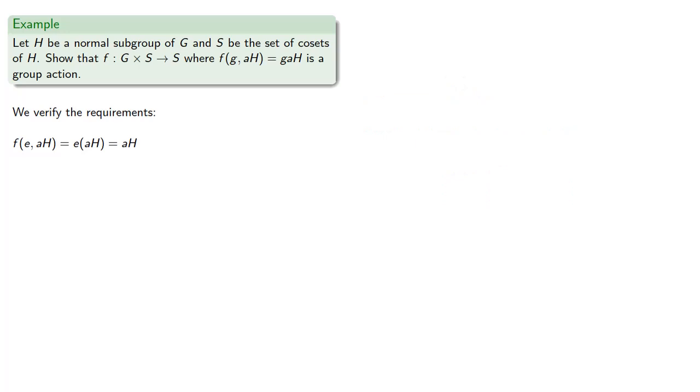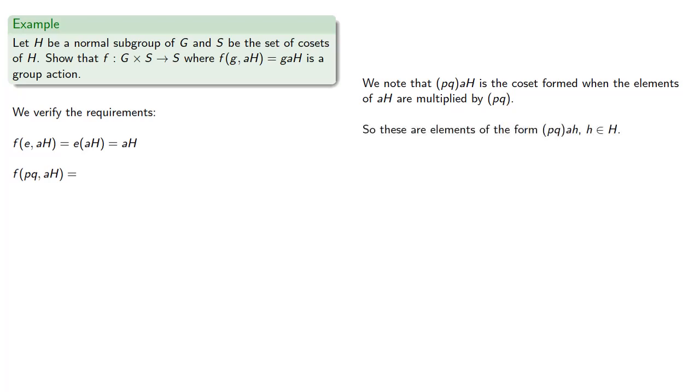Next, we want to verify associativity. So we need to check F of PQ applied to AH. So again, we know that PQ applied to AH is a coset formed when the elements of AH are multiplied by the product PQ. So these are elements of the form PQAH, where H is an element of H.